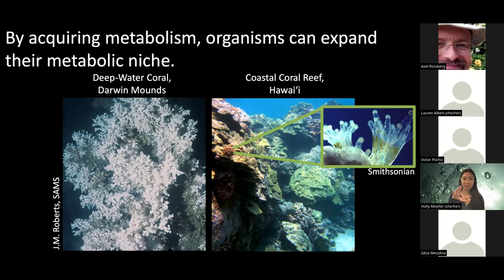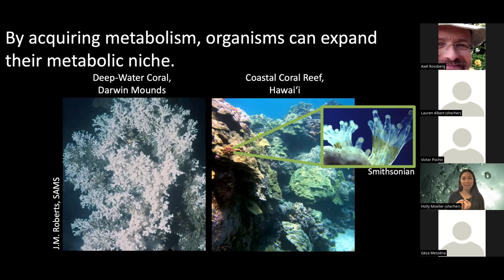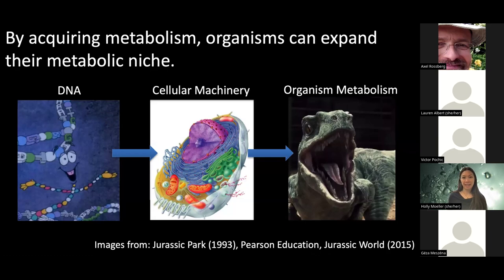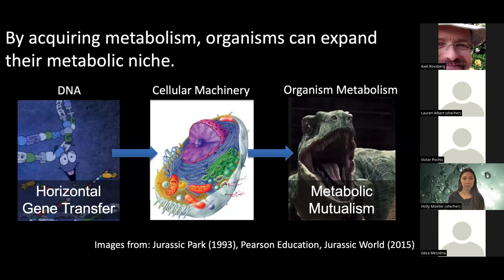Corals have had to find a way to live in this food-depleted environment through the acquisition of metabolism. Zooming in on coral polyps, you can see photosynthetic algae — zooxanthellae or Symbiodiniaceae, dinoflagellates — living inside the coral tissue, photosynthesizing and providing organic material to the coral in exchange for housing, nitrate, and other nutrients. Through acquiring photosynthesis by harnessing these photosynthetic endosymbionts, corals have been able to create these hotspots of biodiversity in parts of the ocean where a filter-feeding heterotroph would otherwise not survive.